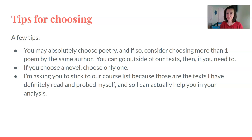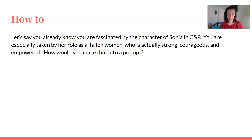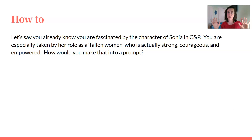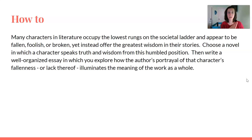Please stick closely to our course list. Let's say you already know what you're going to do — you're going to write about the character of Sonya in Crime and Punishment, particularly her role as a fallen woman who is actually strong and courageous. How do you make that into a prompt? This is really an exercise to see how our intuitions can be formalized. The formal version would be: 'Many characters in literature occupy the lowest realms of the societal ladder and appear fallen, foolish, or broken, yet offer the greatest wisdom in their stories. Choose a novel in which a character speaks truth and wisdom from this humbled position and write a well-organized essay explaining how the author's portrayal of that character's fallenness illuminates the meaning of the work as a whole.'